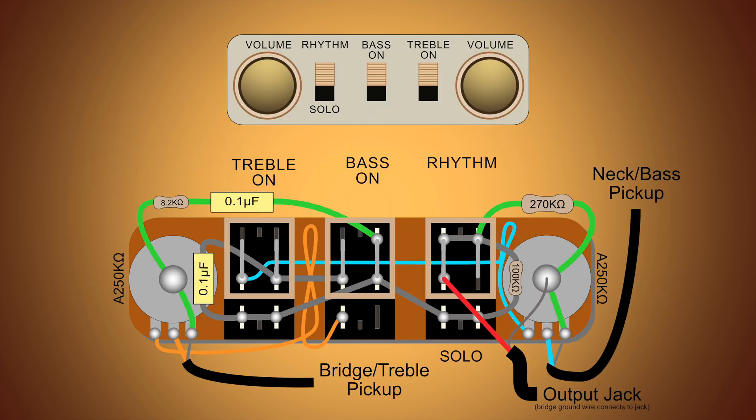From this view, the bridge volume knob is now on the left, the neck volume on the right. And to turn on the pickups and rhythm option, the switches are positioned at the top.